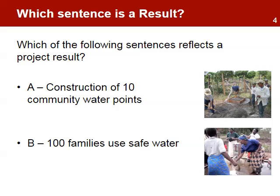To start our understanding of results, we first need to clarify how results are identified in development projects. From the following two sentences, which one reflects a project result at the outcome level? Sentence A: construction of 10 community water points, or Sentence B: 100 families use safe water.